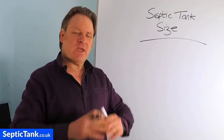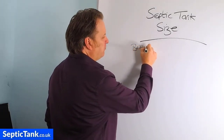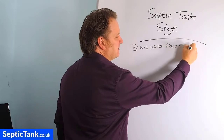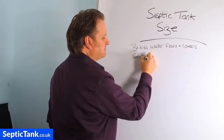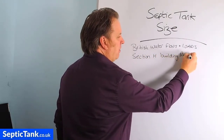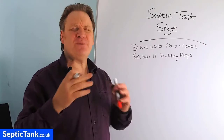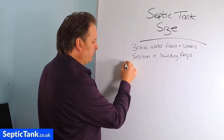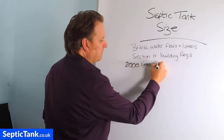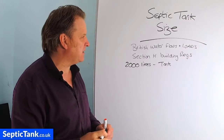Everything is based on British Water — British Water flows and loads. That's number one. Secondly, the figures are based on Section H of Building Regulations. In Building Regs and British Water they state that before you even start — before a single bedroom or person is accounted for — you have to start with 2000 litres. Your tank must have a 2000 litre capacity before you even begin working out the size of your septic tank.